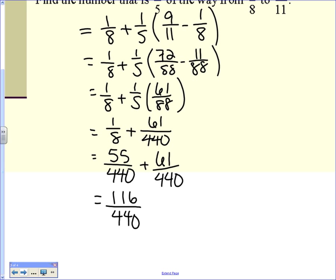Multiply 1 eighths by 55 over 55. 8 times 55 gives you the 440, and then 1 times 55 is just 55.